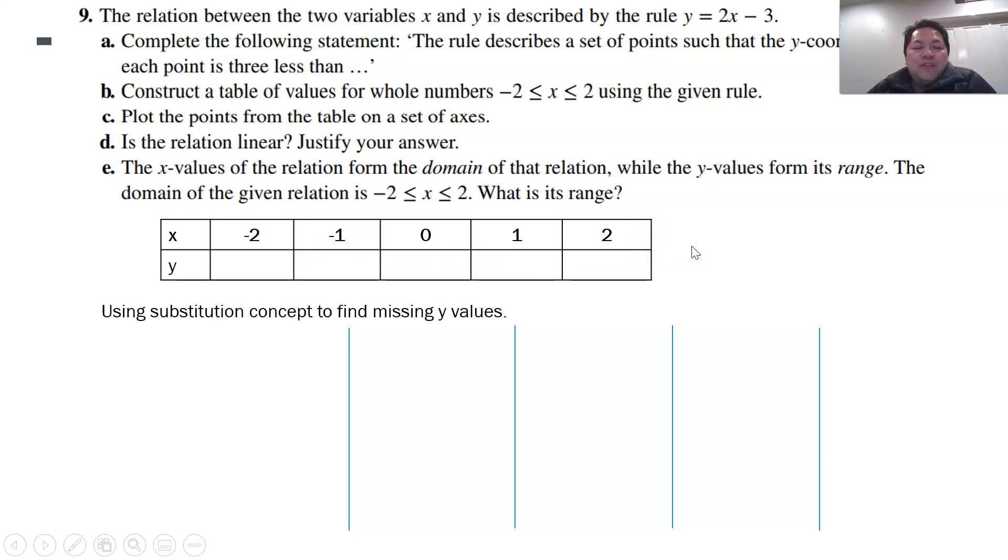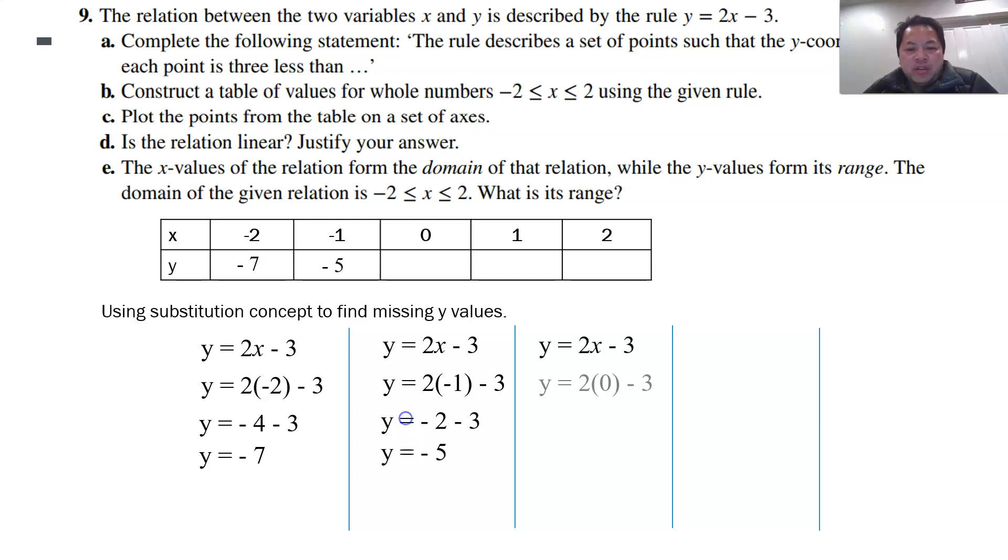And now, the next thing is, you need to find the missing value in y using the equation y equals to 2x minus 3. So we have done this before in algebra. For example, when x is minus 2, I substitute x minus 2 into here. So 2 times minus 2, you actually get minus 4, minus 4, minus 3, you get minus 7. Be careful of the negatives. So that's how you get minus 7 here. You do the same thing, substitute minus 1 into the equation, you get minus 5. Substitute 0 into the equation, you get minus 3. Substitute 1 into the equation, you get minus 1. Substitute 2 into the equation, I actually get y equals to 1.